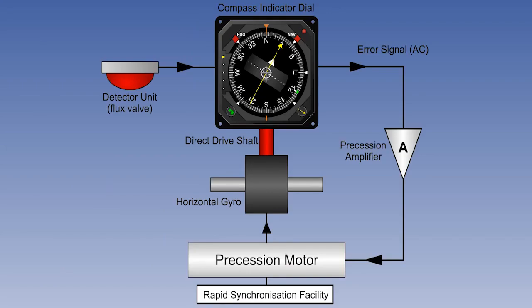The error signal has to be amplified, phase detected, and rectified to DC. The error signal continuously drives the precession motor at the slow precession rate of around three degrees a minute, until the rotor reaches the null position with respect to the stators.